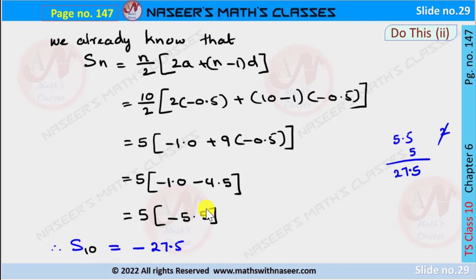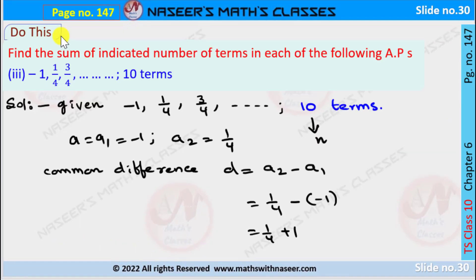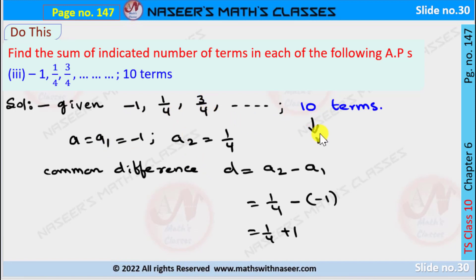Now we solve the third part, page 147. The given AP series is −1, 1/4, 3/4, and so on, with 10 terms. The first term a₁ = −1, the second term a₂ = 1/4, the third term a₃ = 3/4, and n = 10. We now find the common difference d = a₂ − a₁.